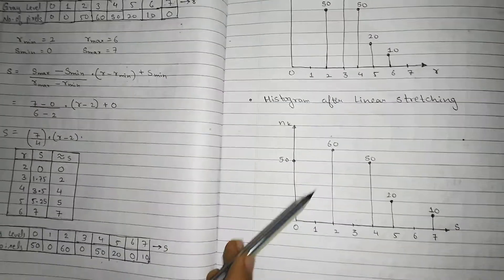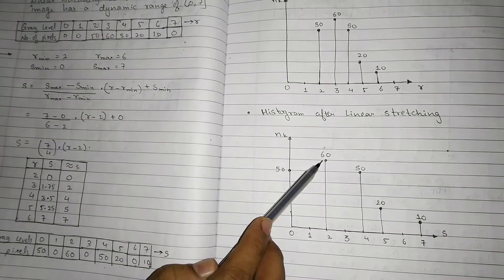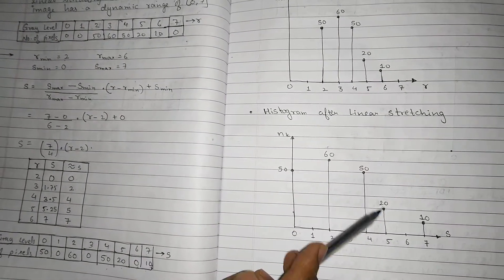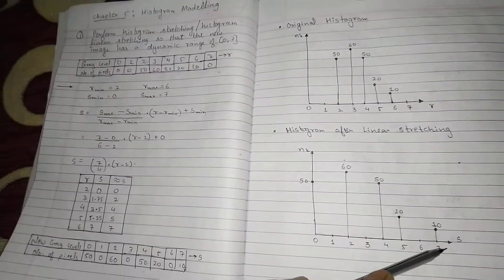Now after linear stretching this is the histogram that I get. 0 becomes 50, 1 is 0, 2 is 60, 3 is 0, 4 is 50, 5 is 20, 6 is 0, 7 is 10. So this is the S values that I got.